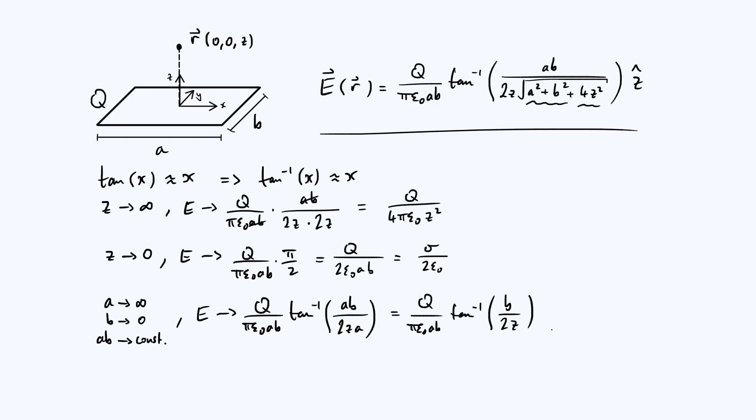Now we can use our small angle approximation, because we are left with something just proportional to b, but we've said that b is going to 0. Because we're sort of squashing up our plate in the y direction, and so this goes towards q over pi epsilon 0 a b just multiplied by b over 2 z. Then the b's cancel.